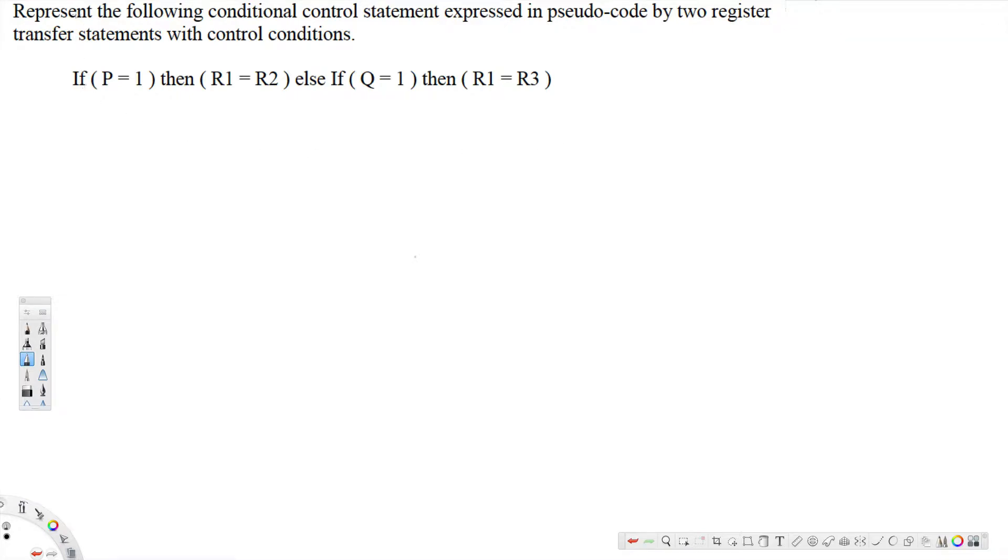What's going on guys, let's look at this problem right here. This question is asking: represent the following conditional control statement expressed in pseudocode by two registered transfer statements with control conditions. If P is equal to 1, then R1 is equal to R2.